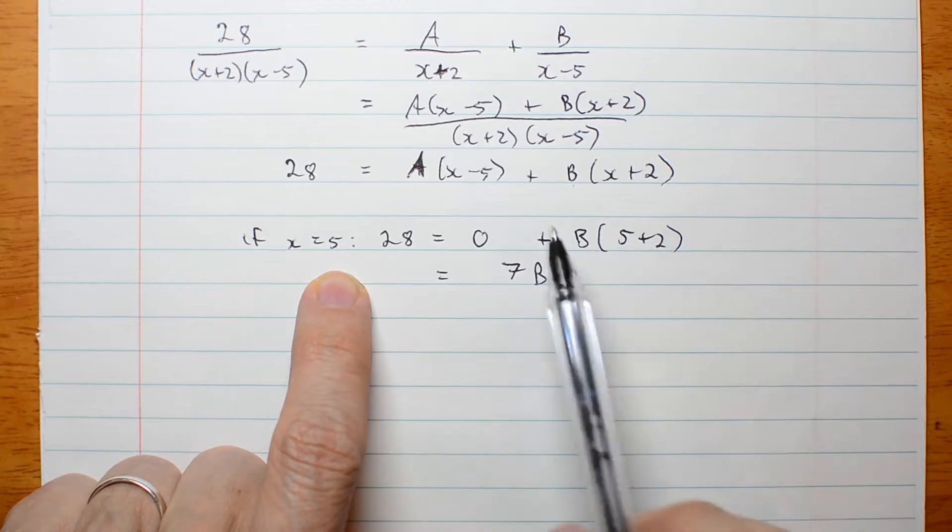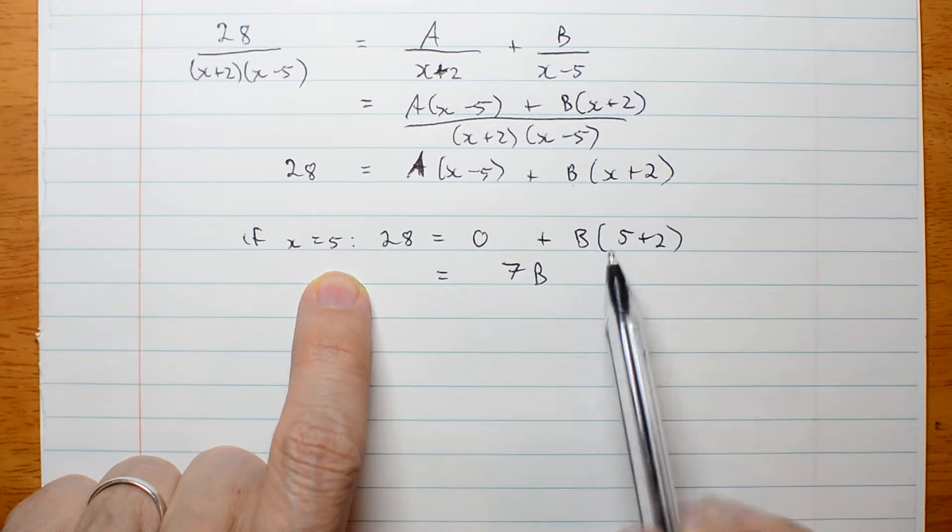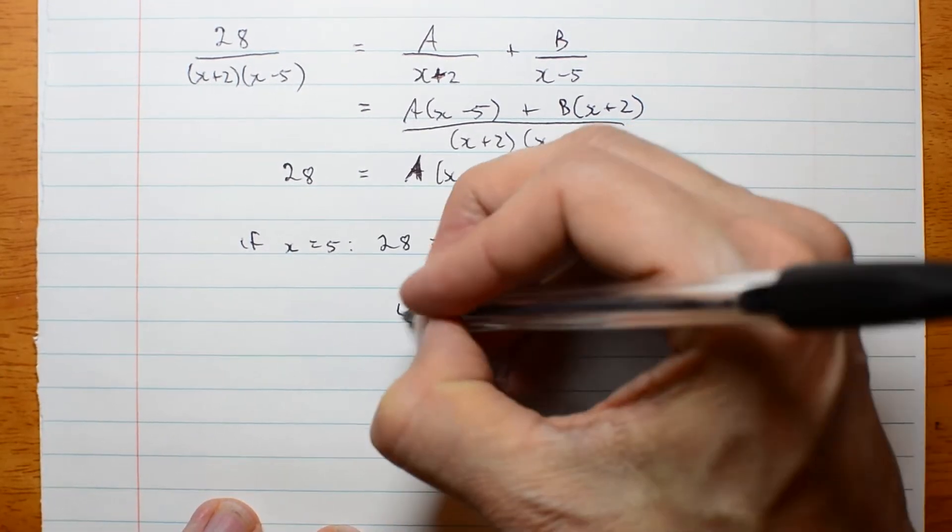Now, when you get better at this, you can skip this step and just go straight to 7b. Okay, that means b must be 4.